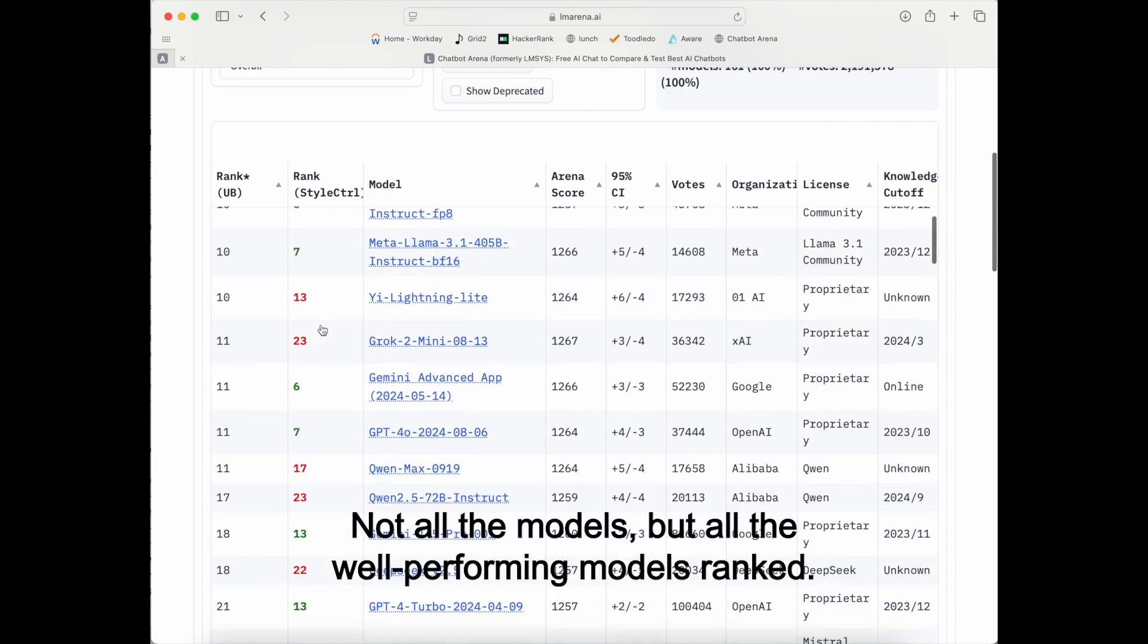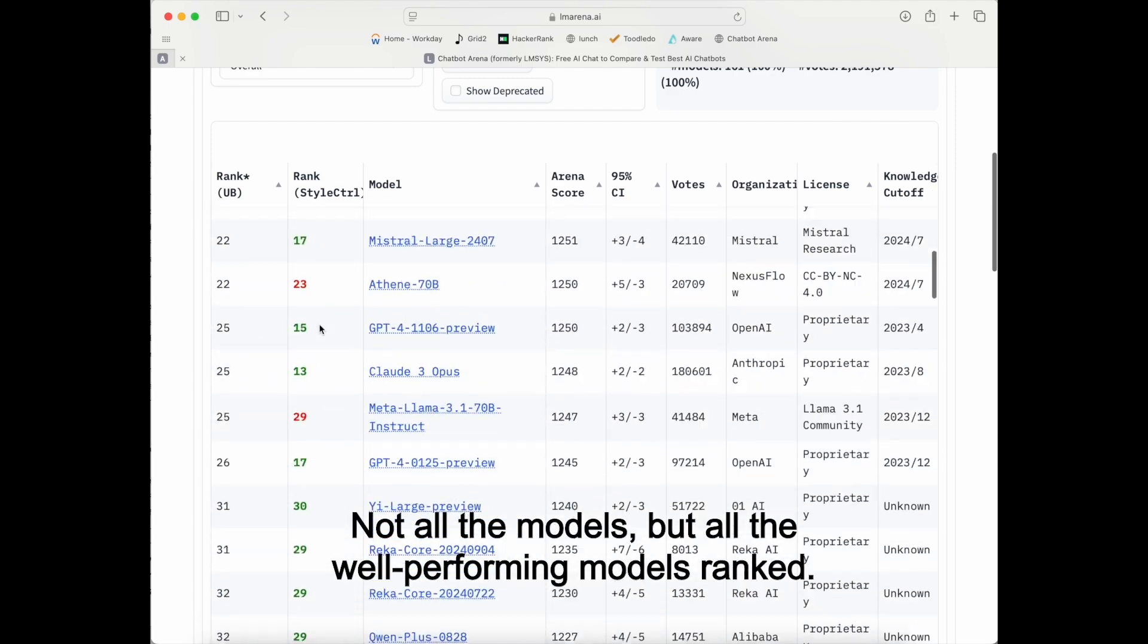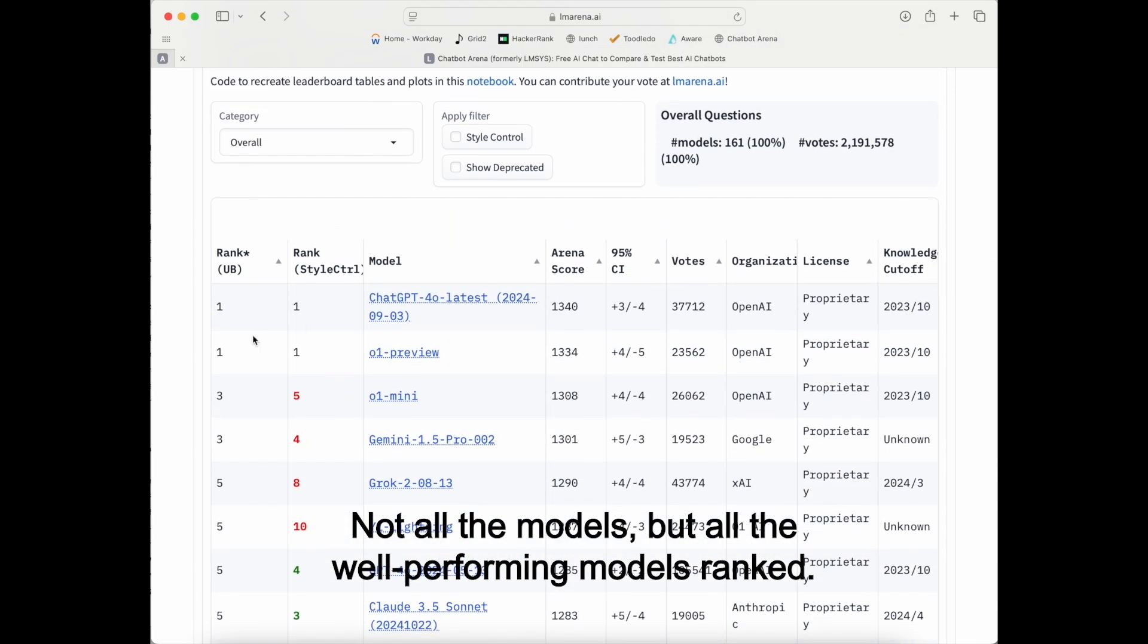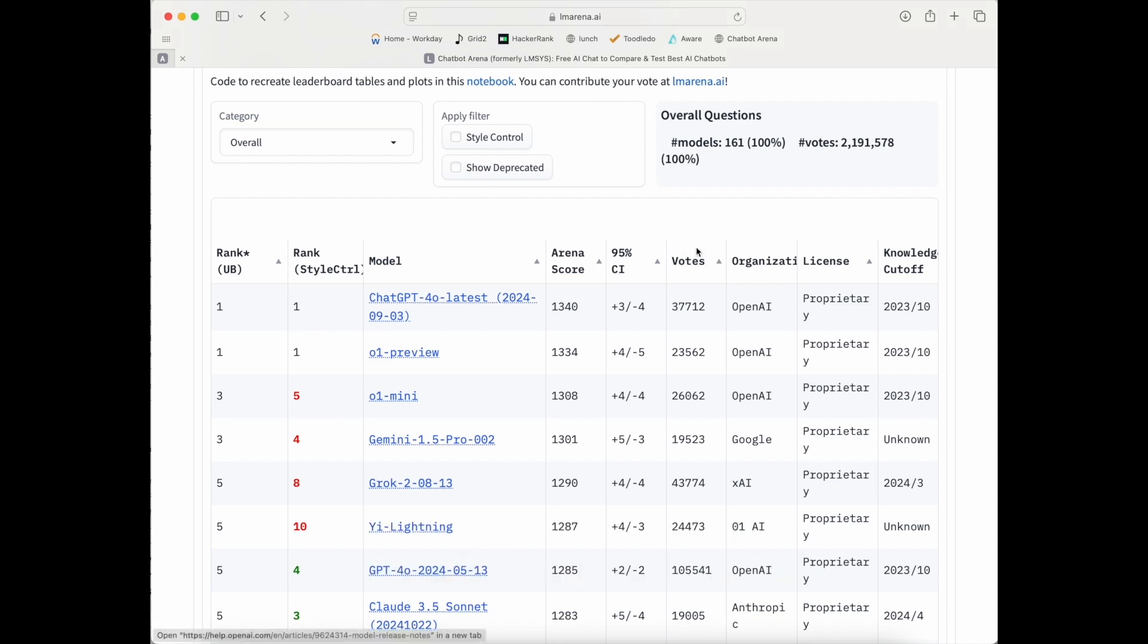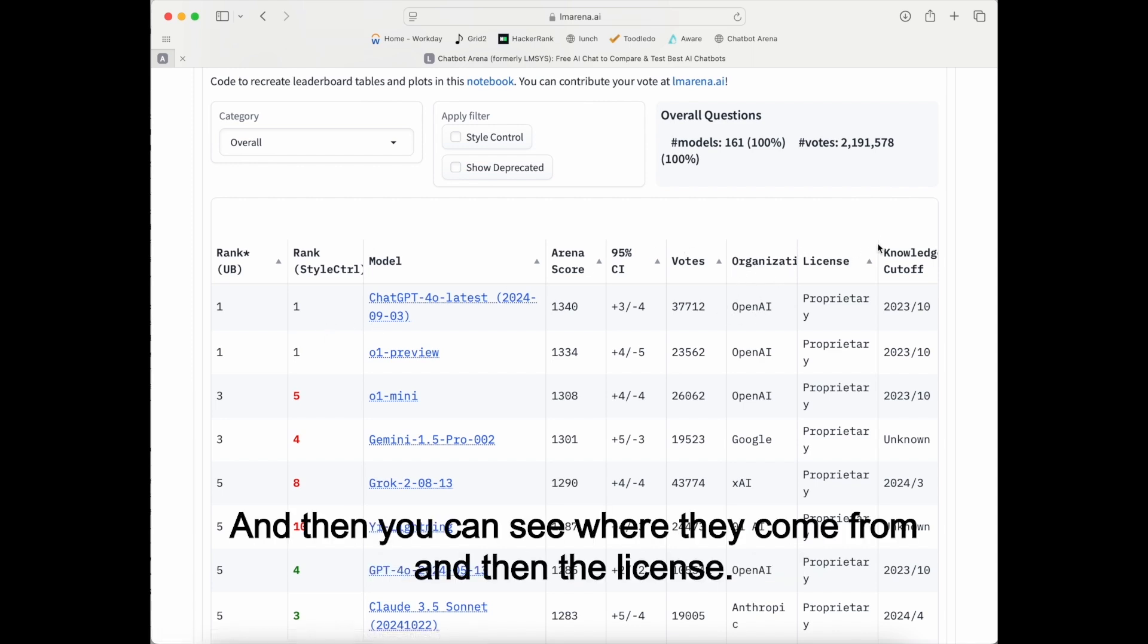And you can see them down here. So they have all the models ranked. Or not all the models, but all the well-performing models ranked. And then you can see where they come from and then the license.